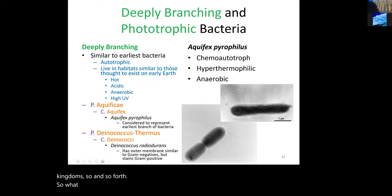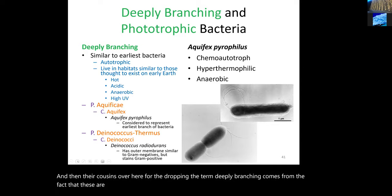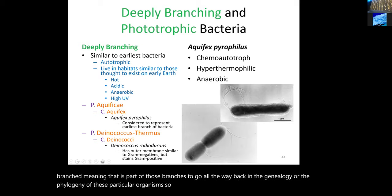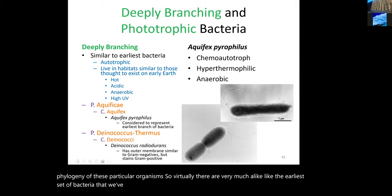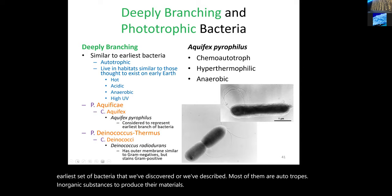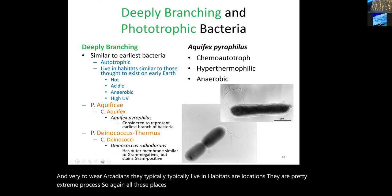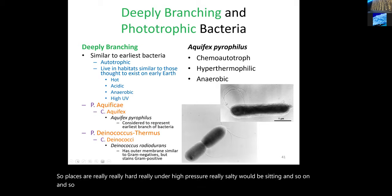Deeply branching organisms are related to the oldest organisms we know — branches going all the way back in the phylogeny of these bacteria. They very much resemble the earliest bacteria we've described. Most are autotrophs, utilizing inorganic substances to produce their materials. Similar to Archaea, they typically live in extreme habitats resembling primitive Earth — really hot, high pressure, salty, or acidic environments.